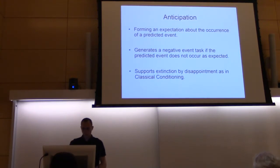Another temporal mechanism is anticipation, and this is basically the system forming an expectation about the occurrence of a predicted event. Let's say the system has a certain hypothesis, like the switch turns on the light, and it sees that someone turns the switch on, so it expects the light to go on and forms an anticipation.